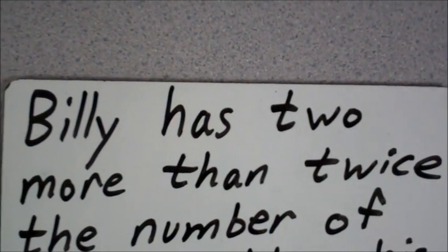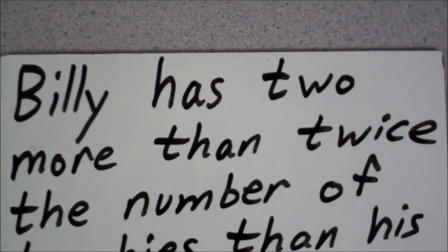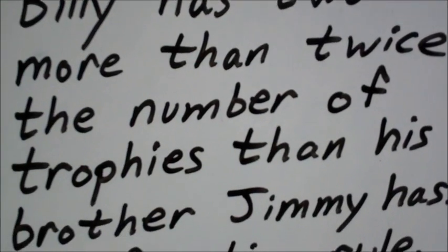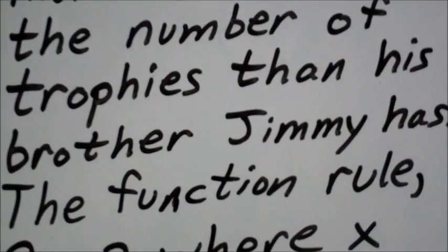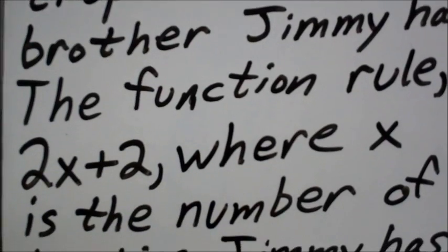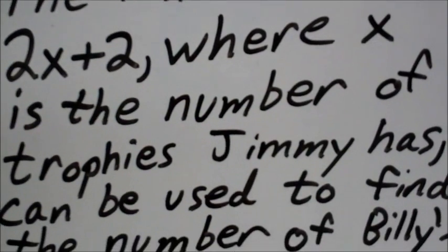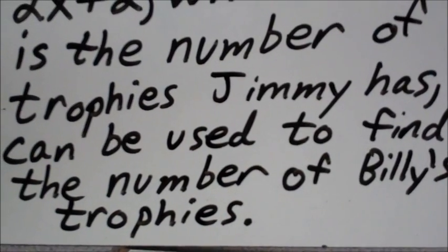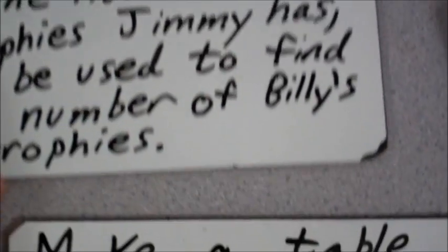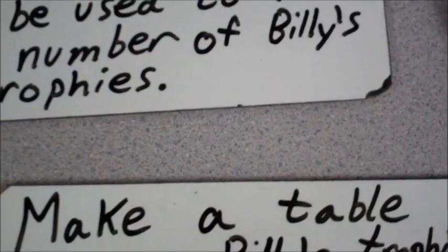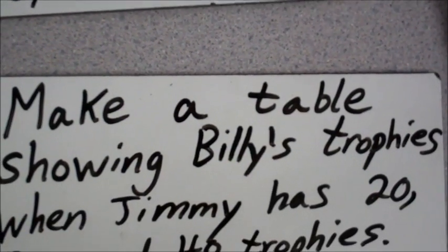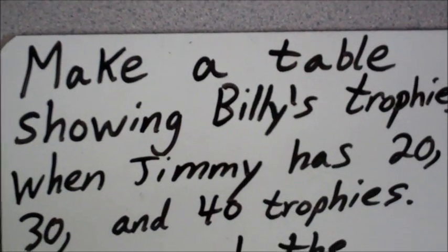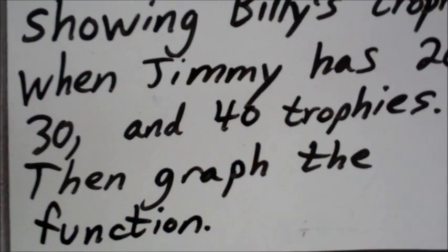Looking at this word problem here, this says Billy has 2 more than twice the number of trophies than his brother Jimmy has. The function rule, 2x plus 2, where x is the number of trophies Jimmy has, can be used to find the number of Billy's trophies. What you're going to do here is make a table showing Billy's trophies when Jimmy has 20, 30, and 40 trophies. Then graph the function.